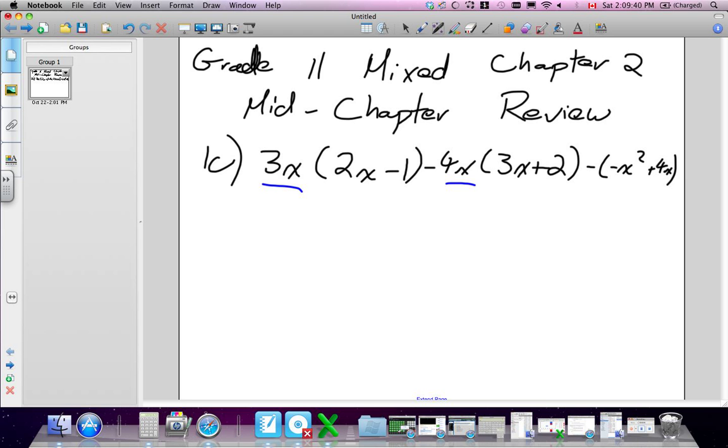First thing we're going to do is we need to multiply the terms on the outside to the terms inside the brackets. First we'll do the first set. I'm going to do in red the signs that are in front. So positive 3x times positive 2x, we have positive 6x squared. We don't need to write the positive sign for this first term. Positive 3x times negative 1, so we put negative 3x.